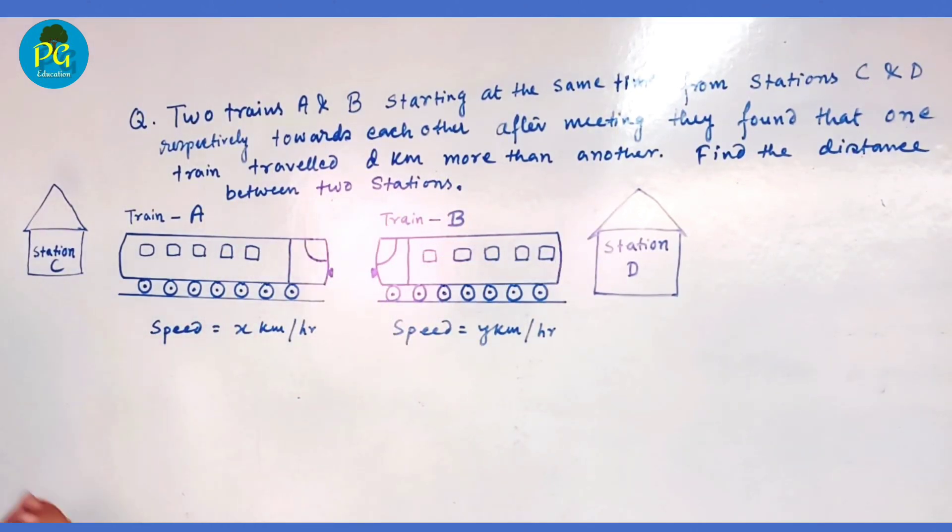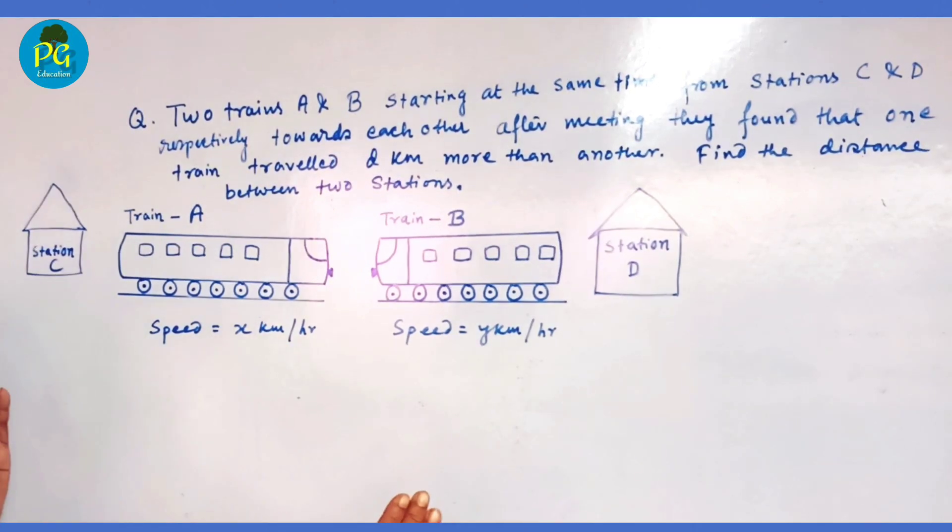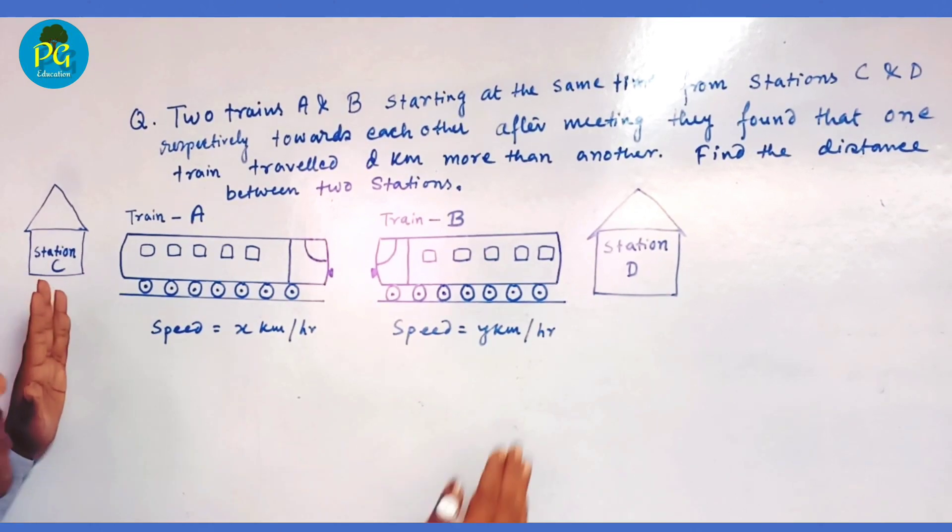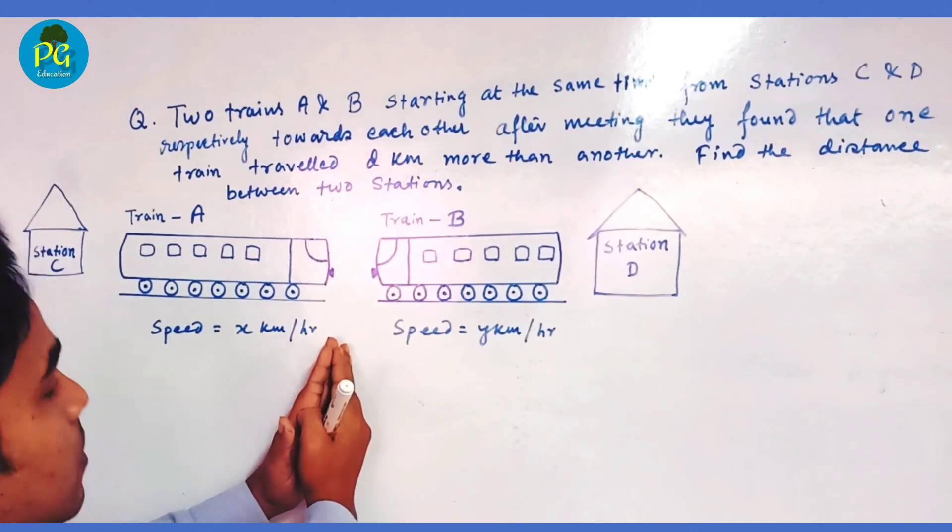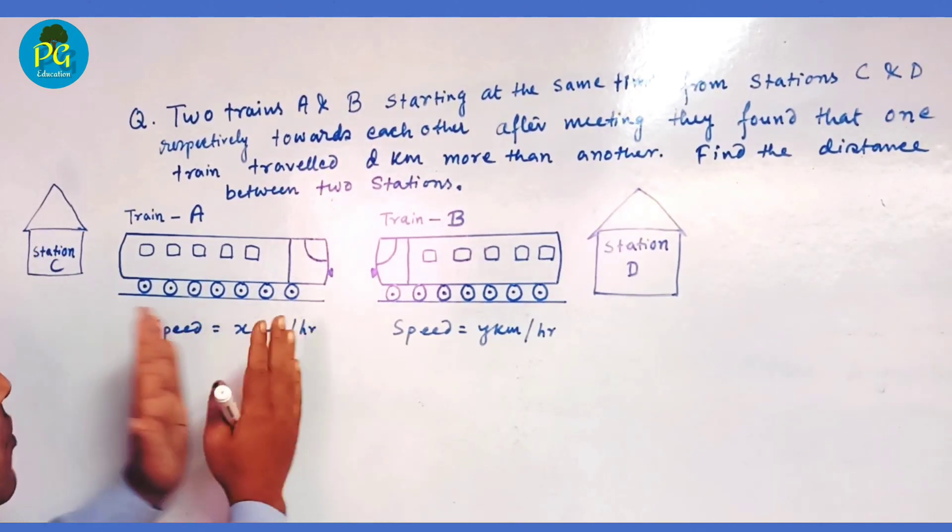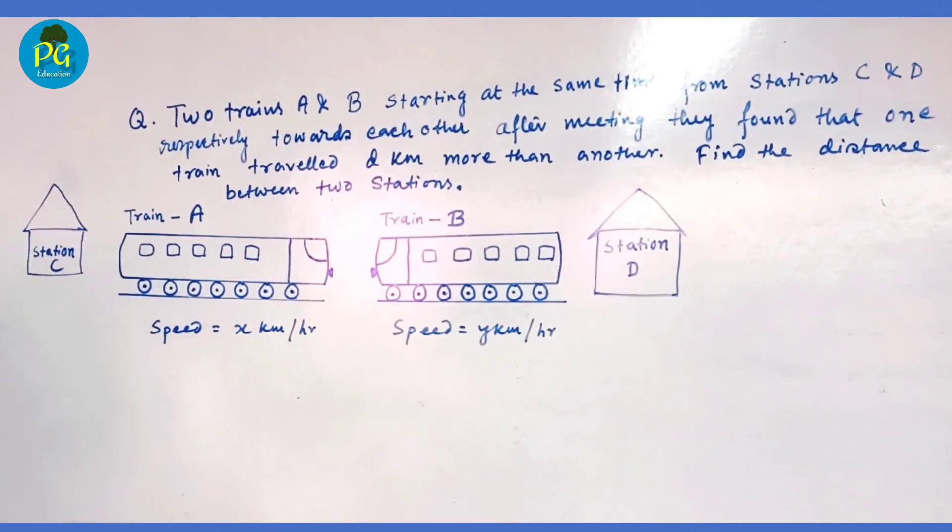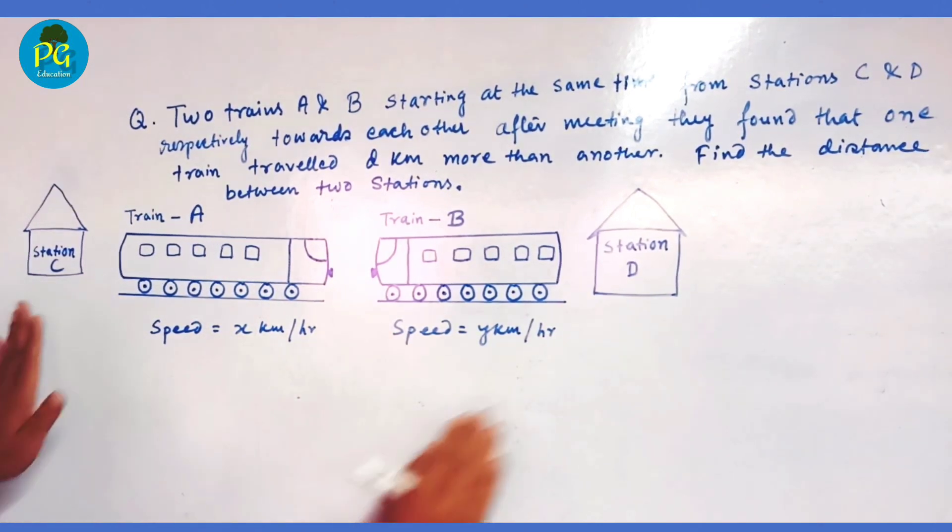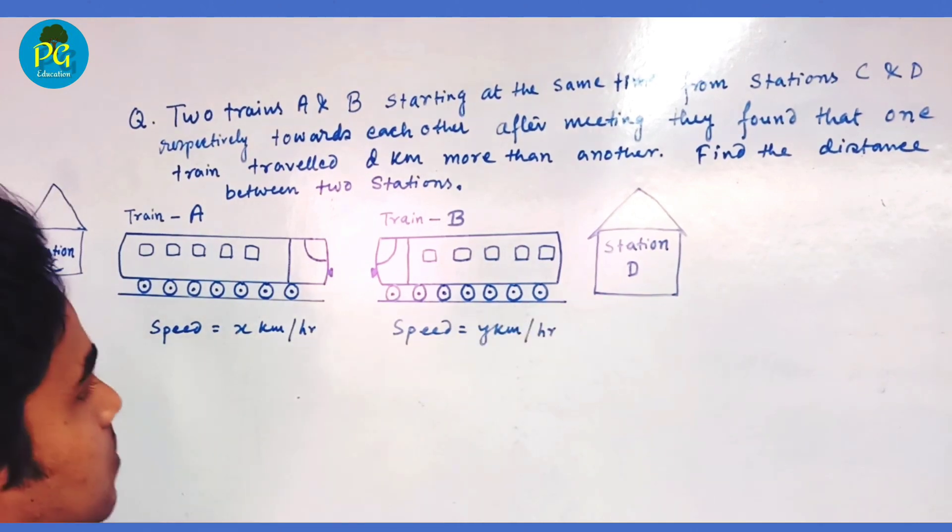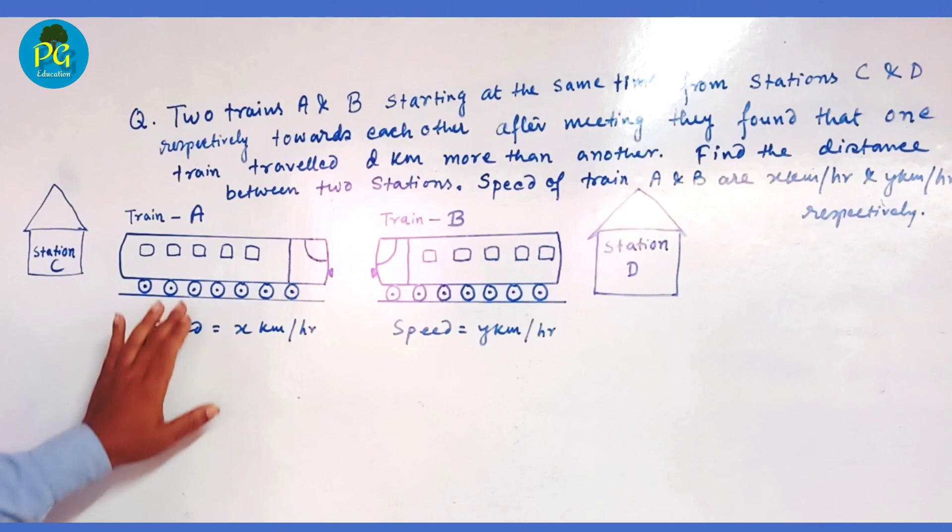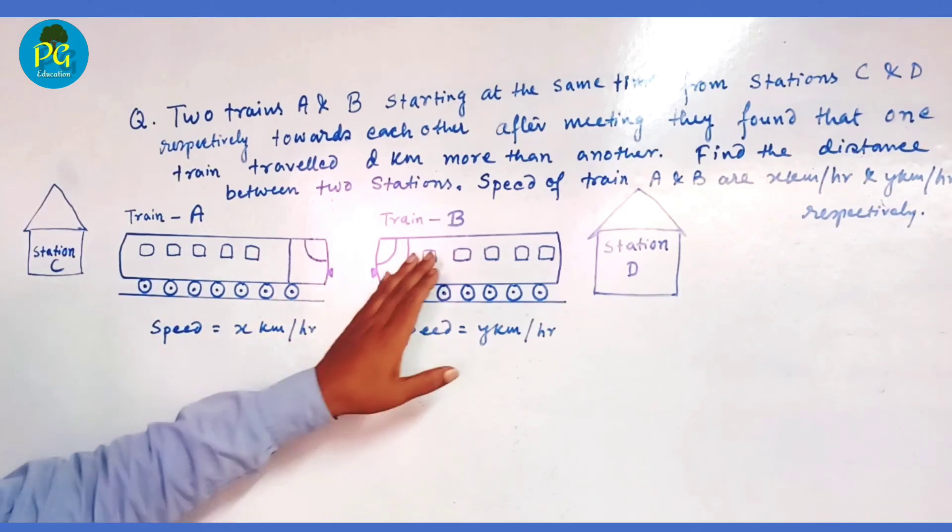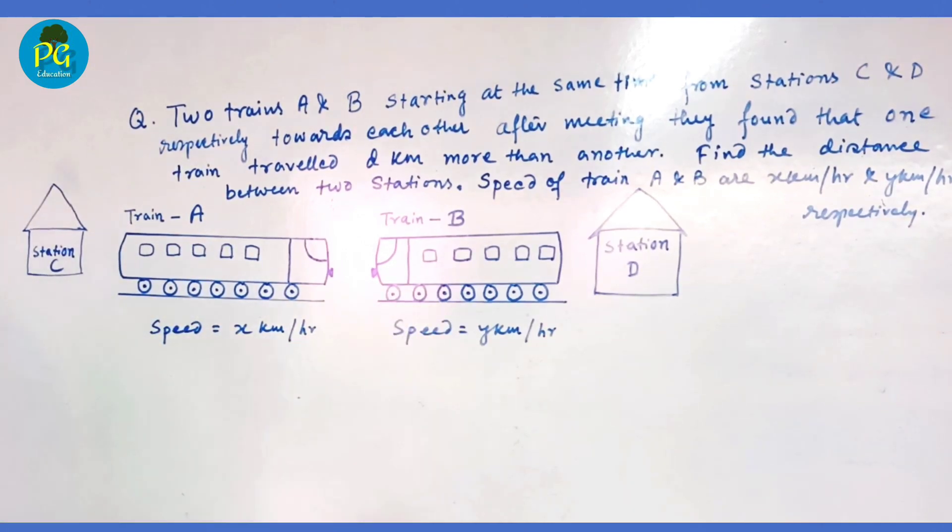Train A and train B started at the same time from station C and station D. When they meet each other, they found that one train has traveled D kilometers more than another train, and we have to find out the distance between these two stations. Here's the given data: speed of train A is X km/hr, speed of train B is Y km/hr. They have started at the same time and one has traveled D kilometers more than another.